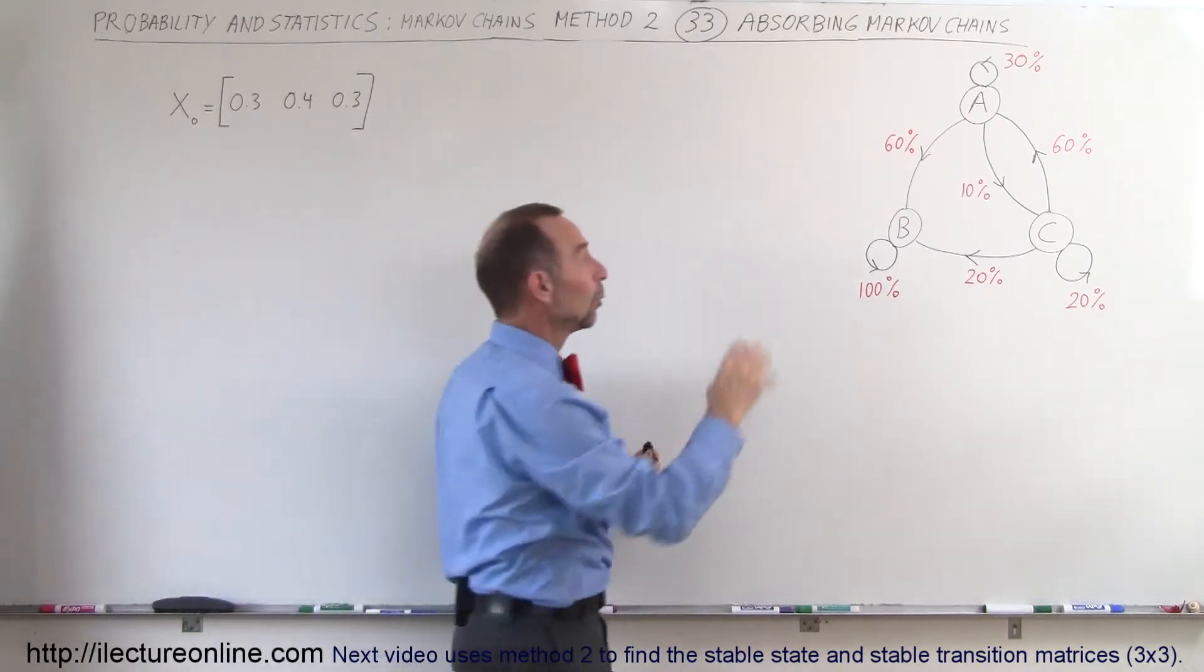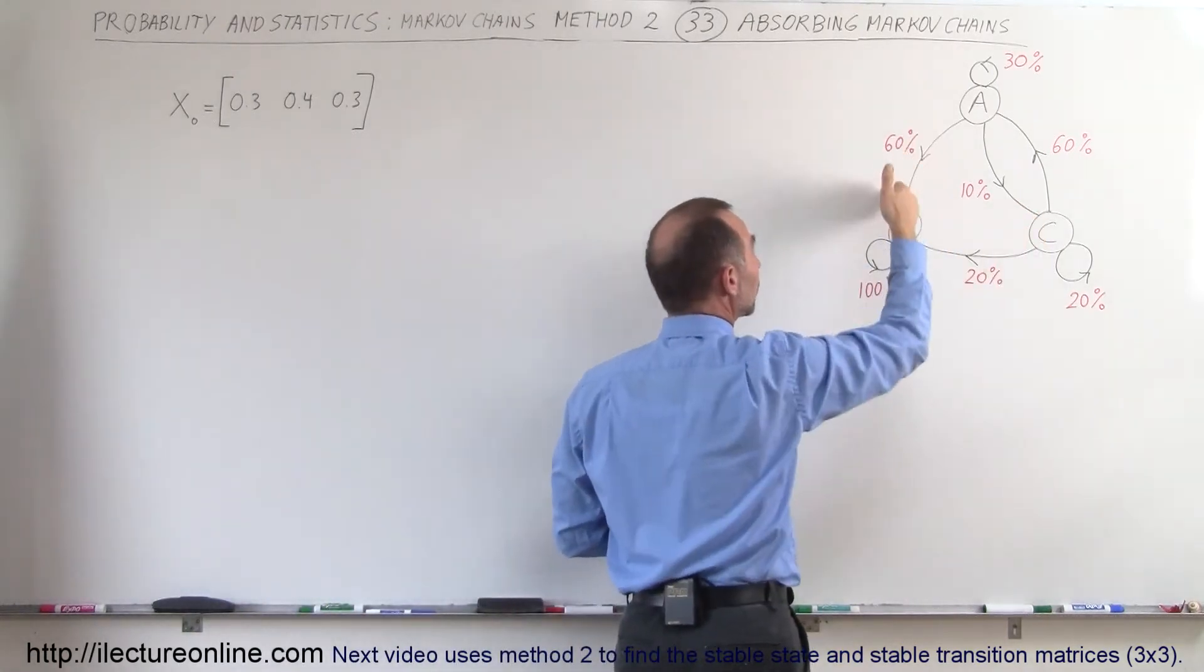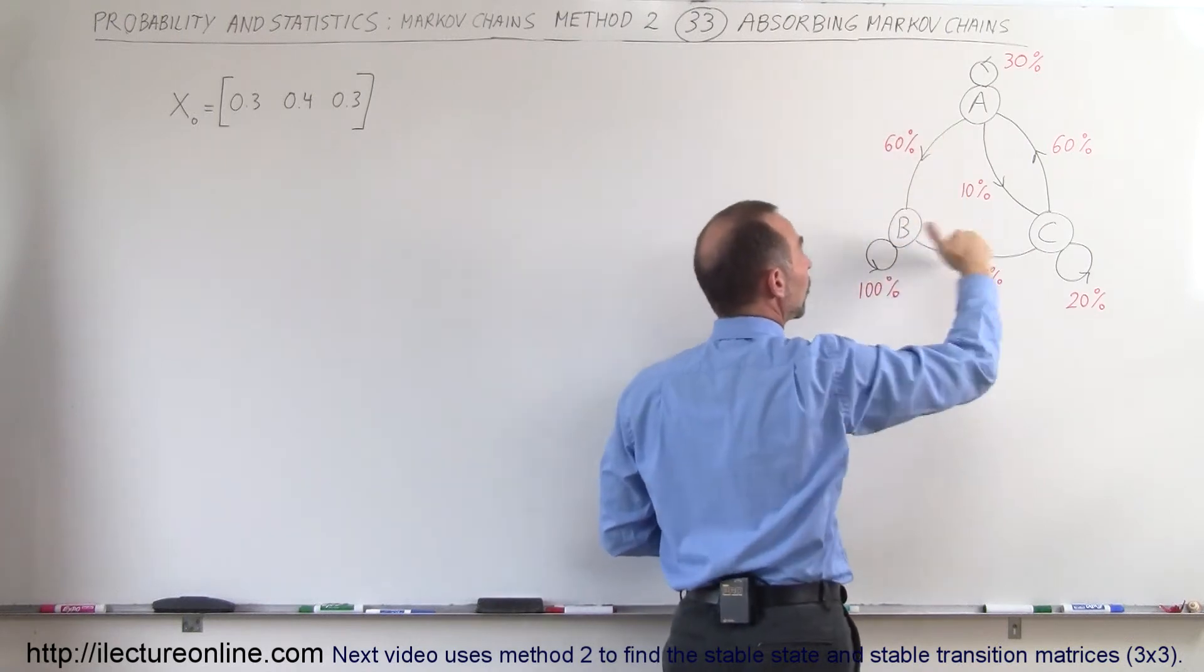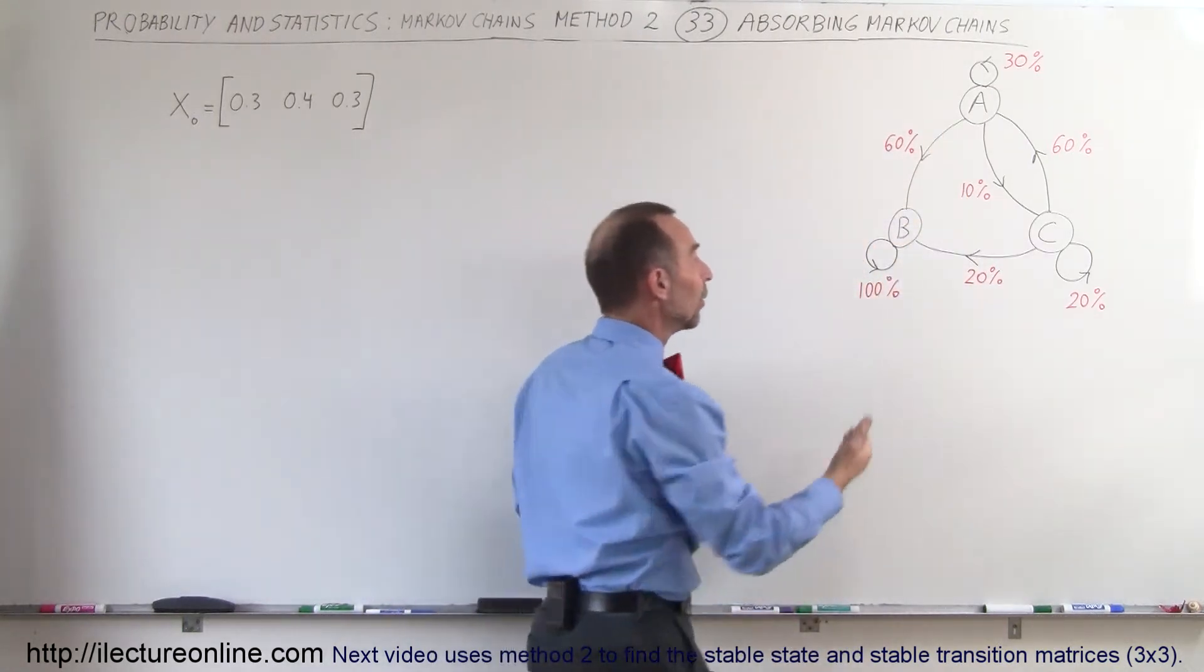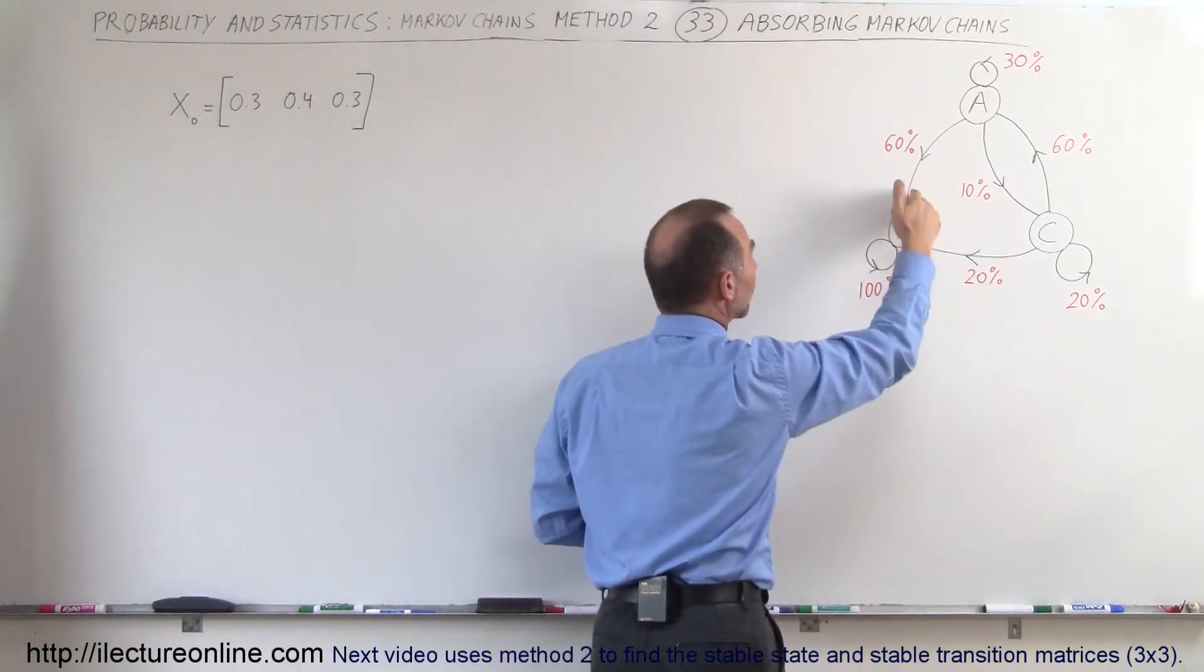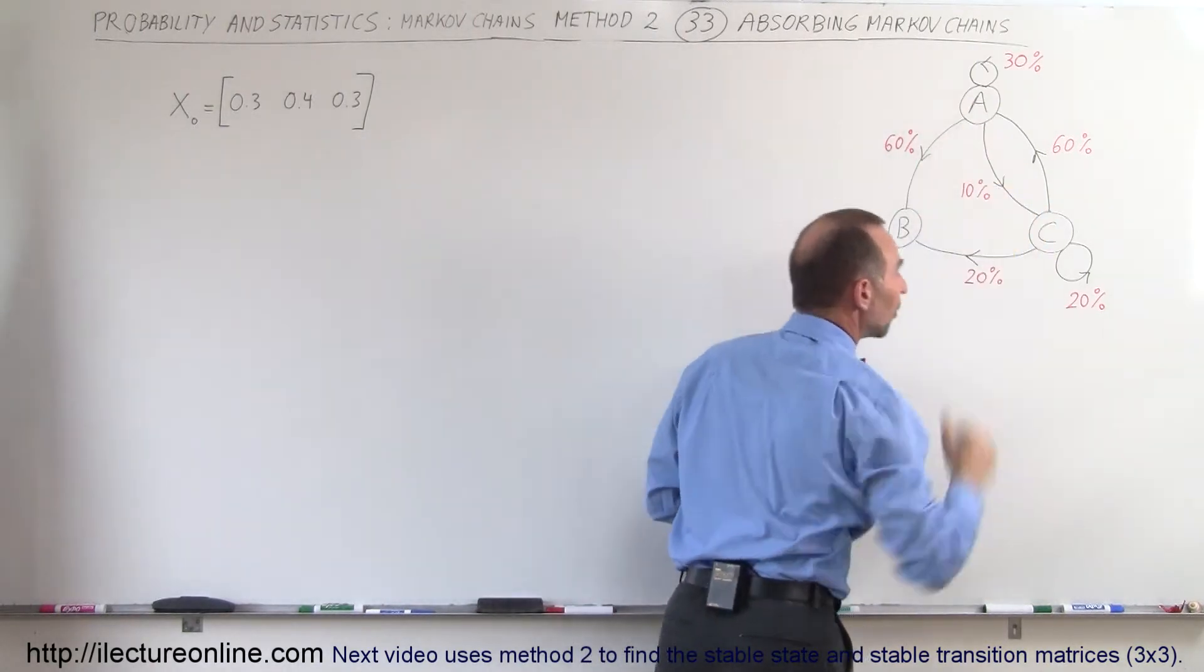When you have a situation like that where one of the stores will get all the customers but none of the customers go back to the other stores, then eventually over time you can see that B will end up with 100% of customers, A and C will end up with zero percent of the customers.